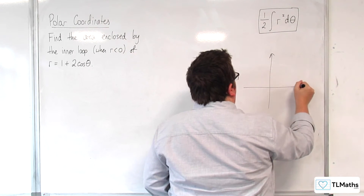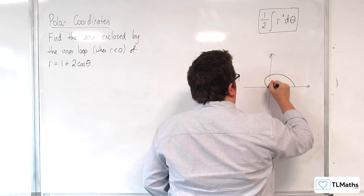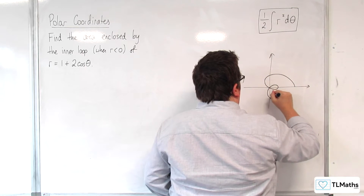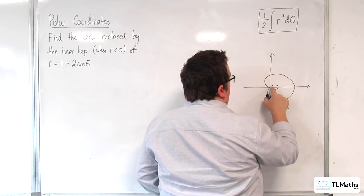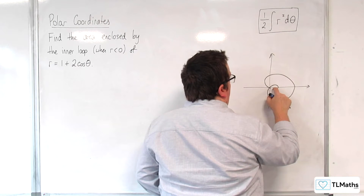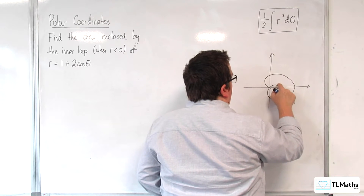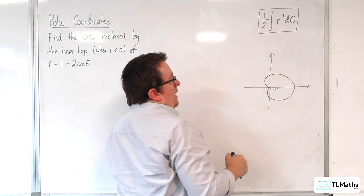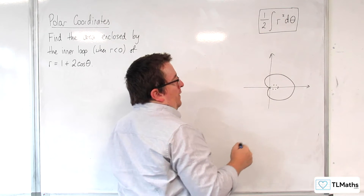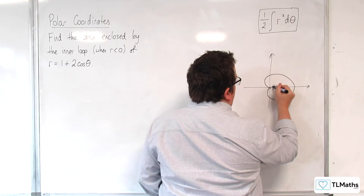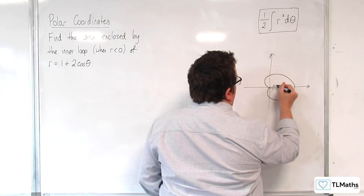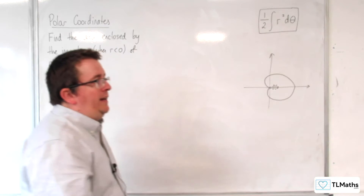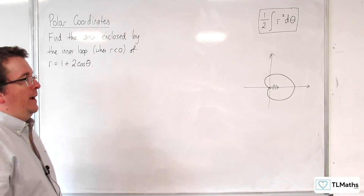We're looking at a curve that looks like this. Notice this part here — we have r as negative, and I'm interested in that shaded region there.